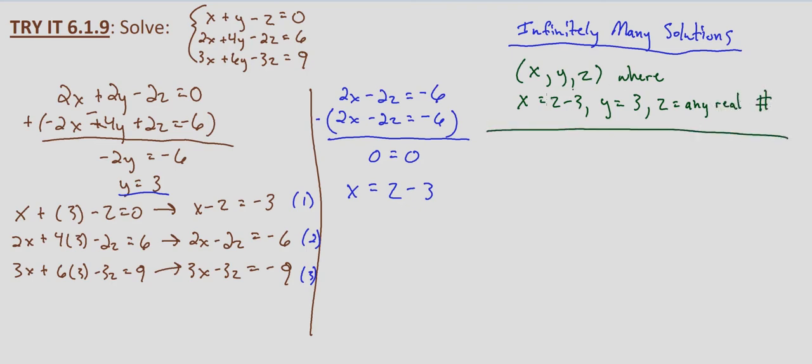So let's go ahead and check that. How do we check that, you ask? Well, since z equals any real number, let's say z equals five. And you can pick any arbitrary number you want. So z equals five, then x equals five minus three, which equals two. And we already know y equals three. So let's check that in our original three equations.